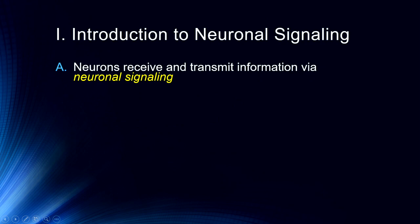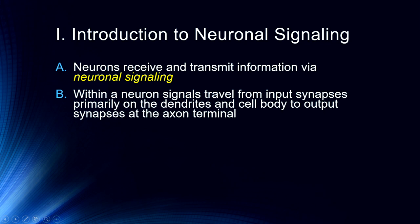Neurons receive and transmit information via what we call neuronal signaling. Within a neuron, signals travel from input synapses primarily on the dendrites and cell body to output synapses on the axon terminal. Neurotransmitters bind with the postsynaptic neuron on the dendrite, dendritic spines, and the cell body, altering the electrochemical properties of the cellular membrane. If altered sufficiently, they generate a single electrical signal which travels the full axon down to the axon terminal, causing the release of neurotransmitters, and then that signal moves on to the next neuron.